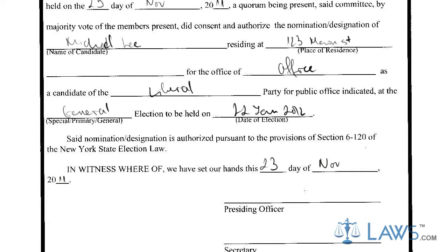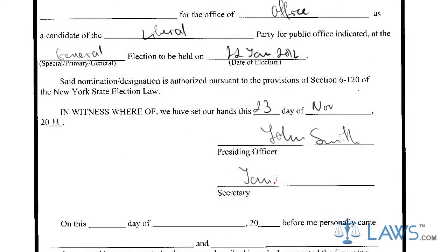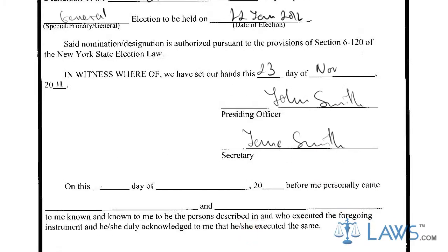In this authorization, a notary public must certify the document, providing the date, their signature, and the notary stamp. The notary must also include the names of the two authorizing agents — in this example, the President and Secretary. Note that the notary must witness the signatures in the document.